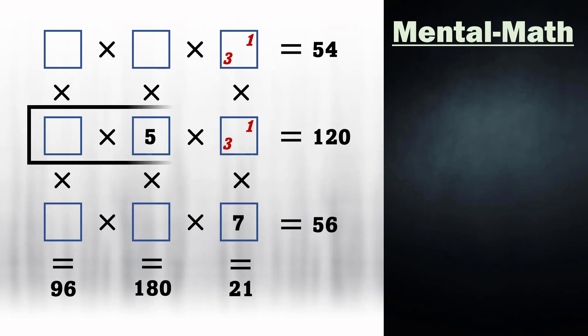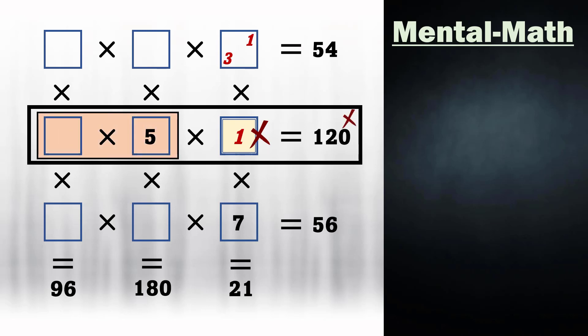Here if you analyze the center row, the number 1 cannot be present in this square because the remaining two numbers cannot give the product as 120 even if you use the two highest numbers. Now the number 1 has only this square available. So it goes there. And eventually the number 3 has to be in the middle square.